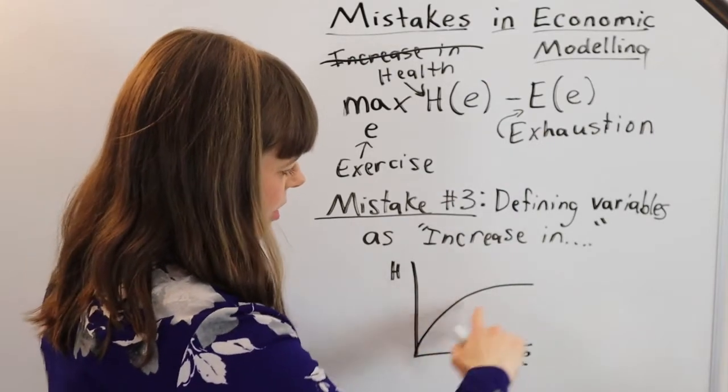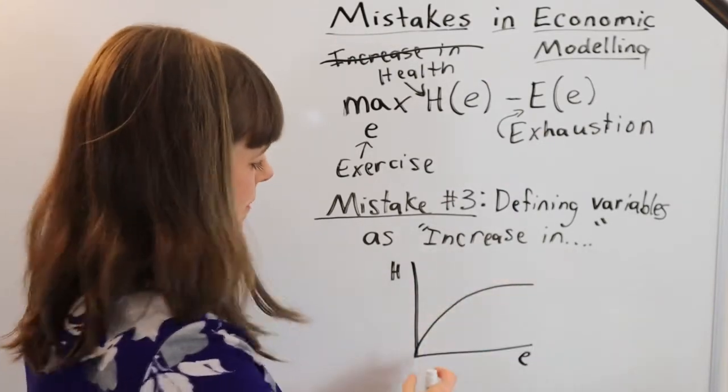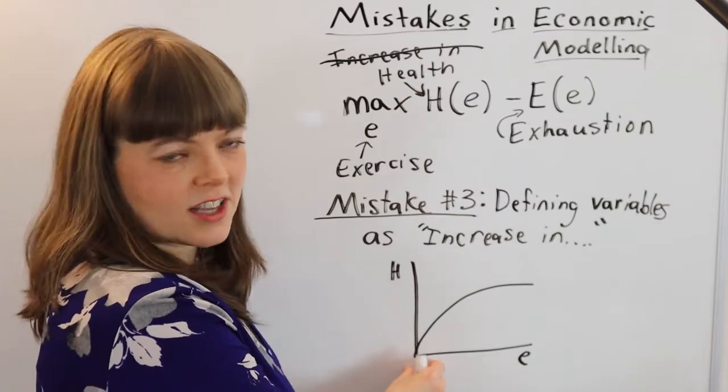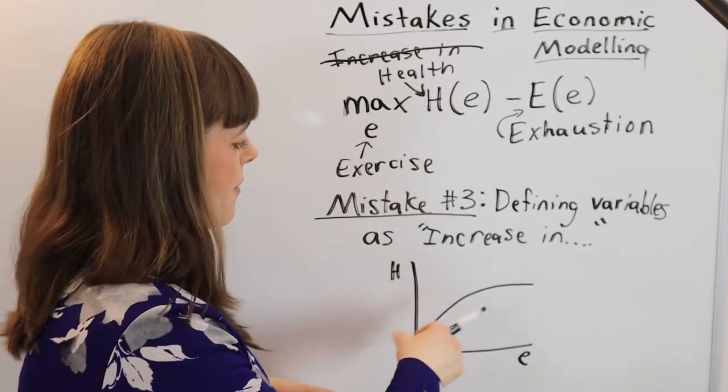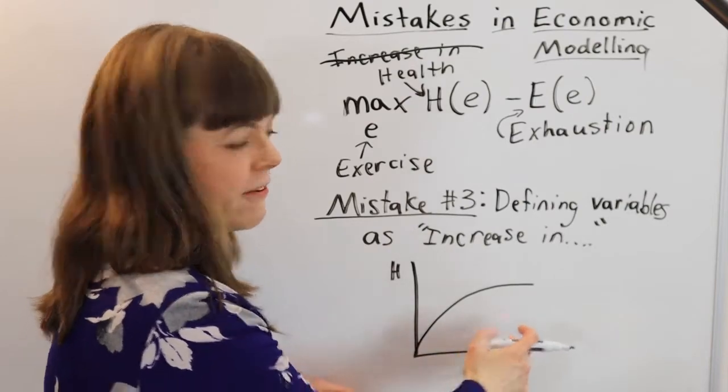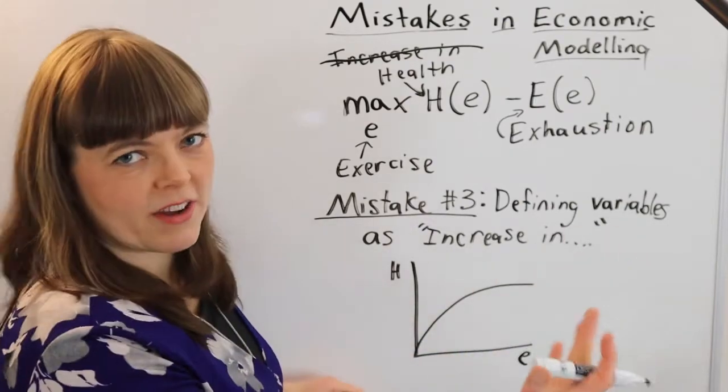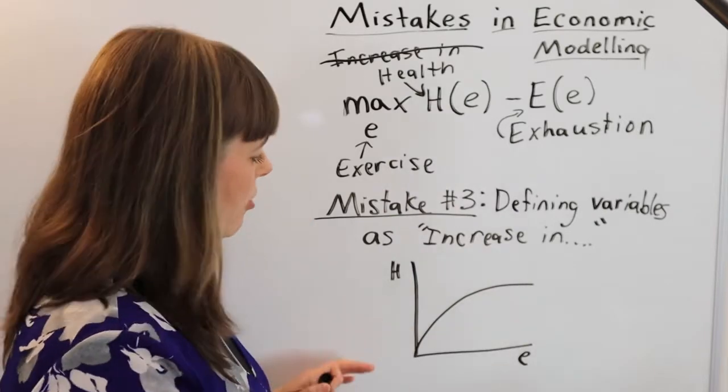So here we've got our graph of health, it's diminishing at the margin where the first half hour of exercise you do per week improves your health a lot, whereas the 55th half hour of exercise you do doesn't actually add that much to your marginal health.